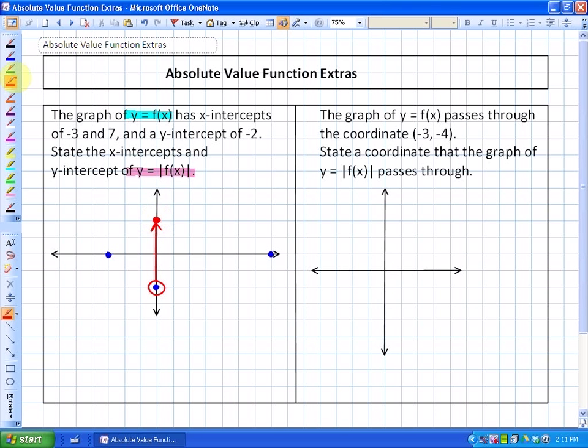the only value that's going to change is that this negative output. As far as y = |f(x)|, this will change. So in answer to the question, our x-intercepts will still be at -3 and positive 7, but our y-intercept will now, for the absolute value function, move up to 2.